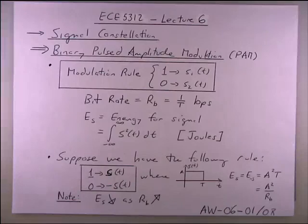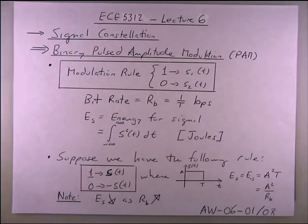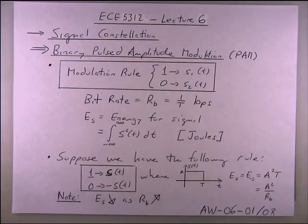This is lecture six of ECE 5312. We talked a lot about AWGN, band-limited channels, source coding, channel coding, Shannon capacity, and Shannon's channel coding theorem. We covered a lot of background material. We're going to revisit the AWGN channel and the bandwidth channel a little bit later.